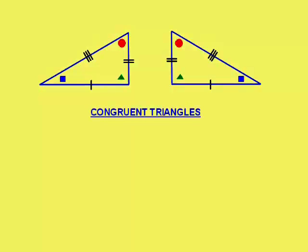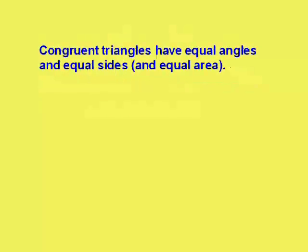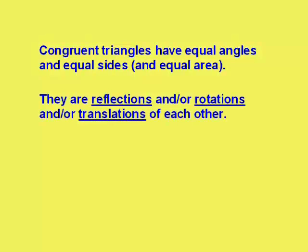They are what we call congruent triangles. Congruent just means identical or equal triangles. They have equal angles and equal sides and as a consequence of that they also have equal areas. They are reflections and/or rotations and/or translations of each other.